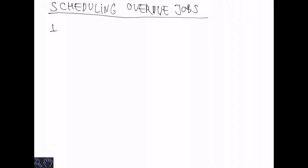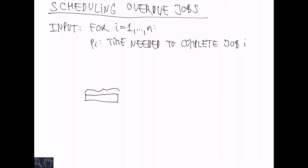Let's define the problem of scheduling overdue jobs. The input consists of n jobs. Job i takes time pi to complete. So this is job 1, 2, and 3.